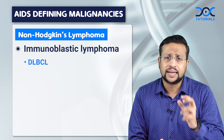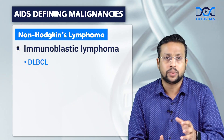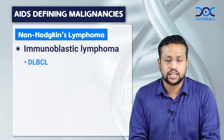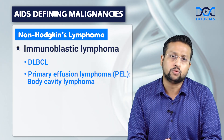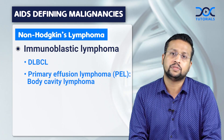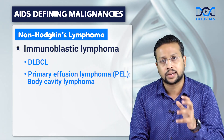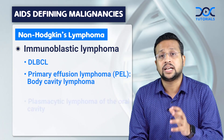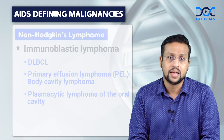Two varieties of immunoblastic lymphoma that specifically occur in HIV include primary effusion lymphoma, which is also associated with KSHV (Kaposi's sarcoma herpesvirus), and plasmacytic lymphoma of the oral cavity.